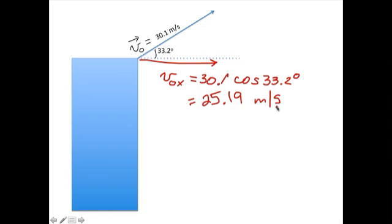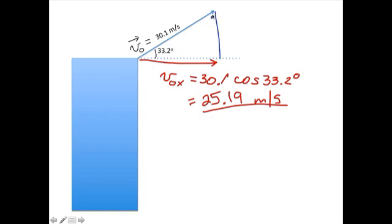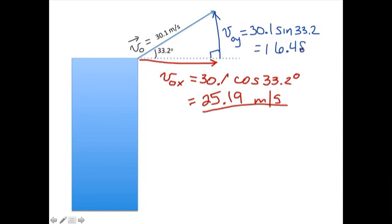The velocity in the x direction does not change, because gravity doesn't operate in the horizontal direction, only in the vertical direction. So this is constant, meaning vx at the end equals 25.19 as well. The y component is the one that's going to change. The initial velocity in the y direction is 30.1 times the sine of 33.2 degrees, which comes out to 16.48 meters per second.